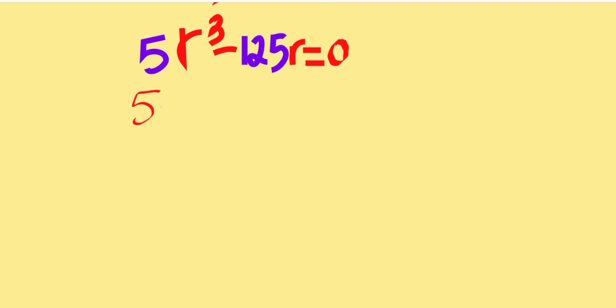So you can factor it out: 5R into—5R cubed divided by 5R will give us just R squared. 125R divided by 5R is the same thing as 25. Then everything equal to 0.